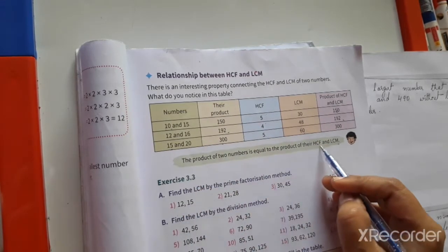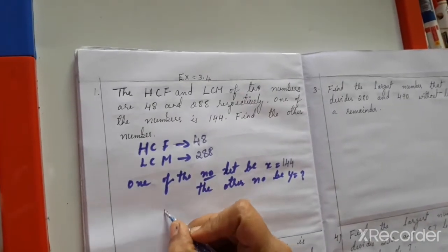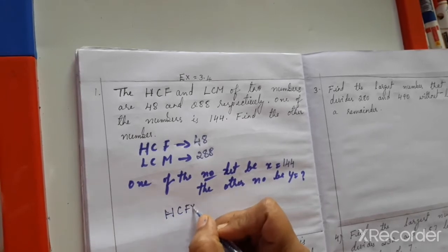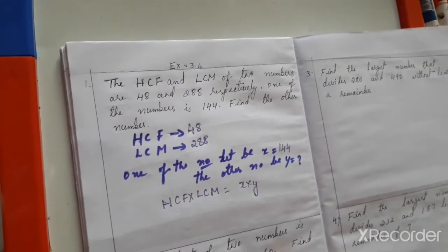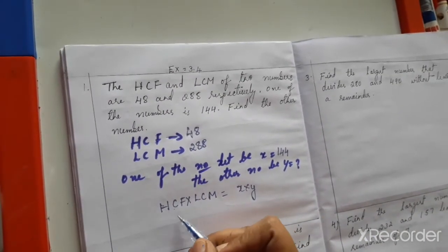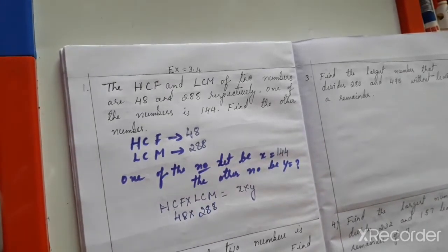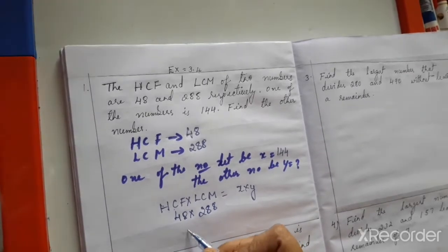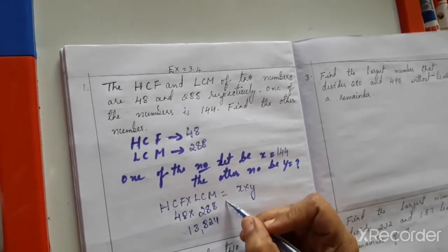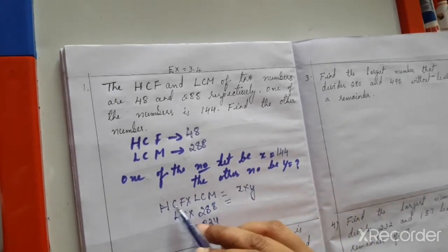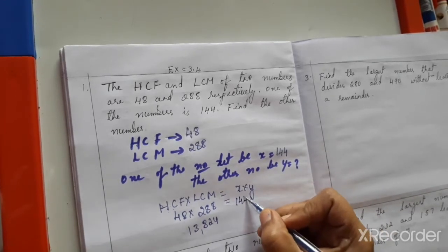The product of two numbers is equal to the product of their HCF and LCM. So HCF × LCM = x × y. Here, HCF is 48 and LCM is 288, so 48 × 288 = 13824. This is equal to x × y. Since x is 144, we have 144 × y = 13824.